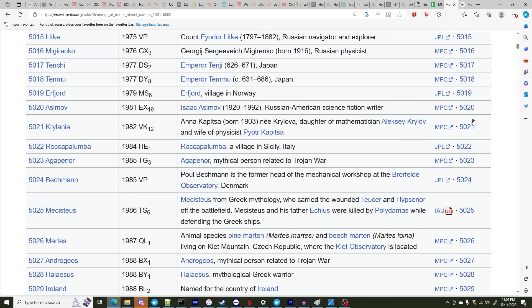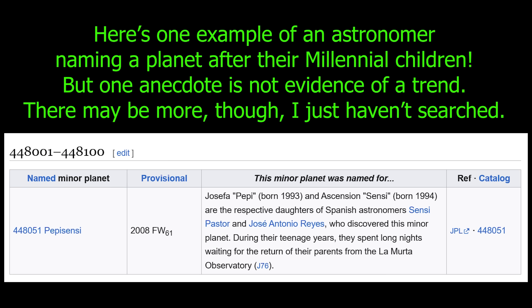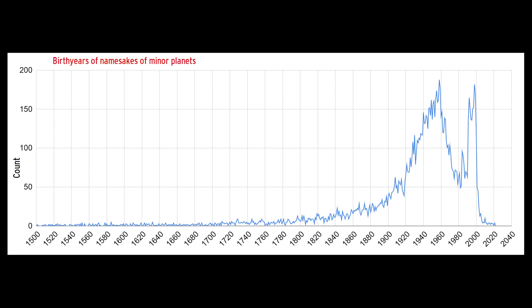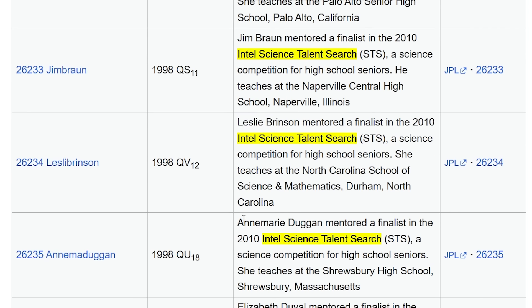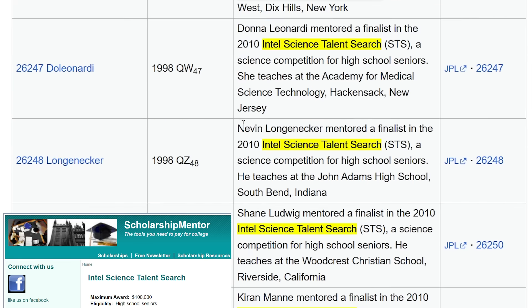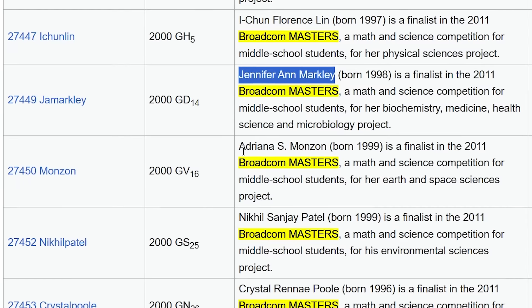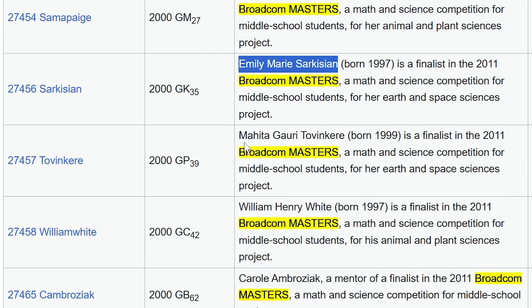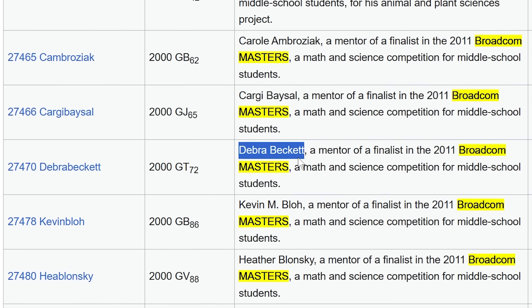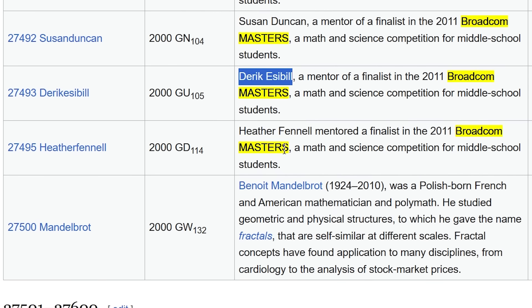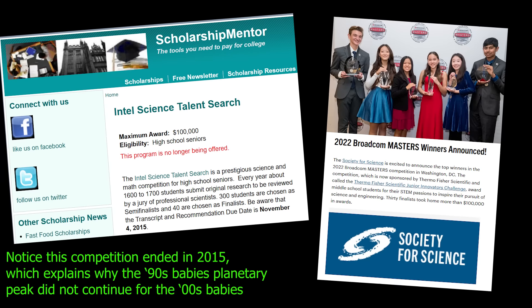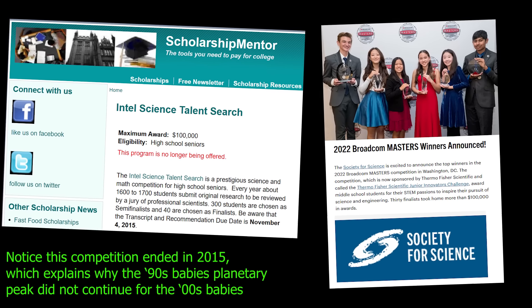And looking through the data manually, I have to say, I can't really find evidence proving this theory. What I did discover after making this graph is that a lot of middle and high school students won the Intel Science Talent Search and Broadcam Masters Math and Science competition. And as a reward, they got planets named after them in the early 2010s. And since these are teenagers we're talking about, it makes sense that they were born in the 90s. So maybe academic prizes like that are responsible for the spike.